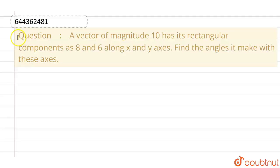Hello everyone. If we talk about this question, a vector of magnitude 10 units has its rectangular components as 8 and 6 along x and y axes. We have to find out the angles it makes with these axes.